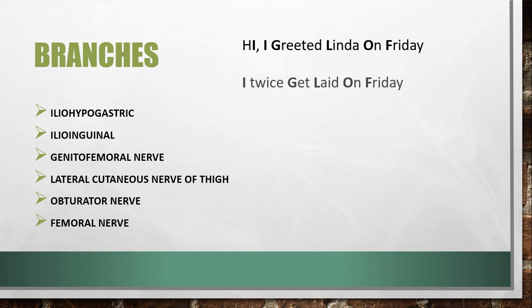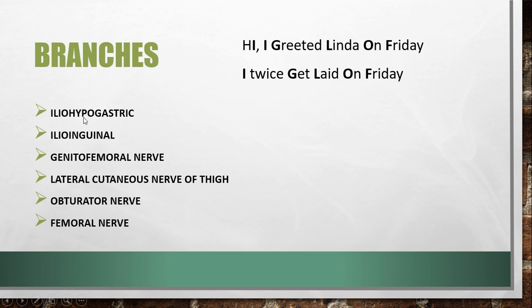There is another mnemonic to remember the names: 'I twice get laid on Friday.' As you can see, there are two nerves starting with 'I,' so 'twice' represents that, and the rest is the same.